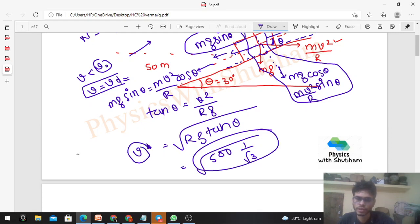If you move with this speed, then no friction will act. What if v is greater than v naught? Then the upper forces will dominate. If the car is trying to skid on the top, then your friction will act downward. So all these things we have already discussed.